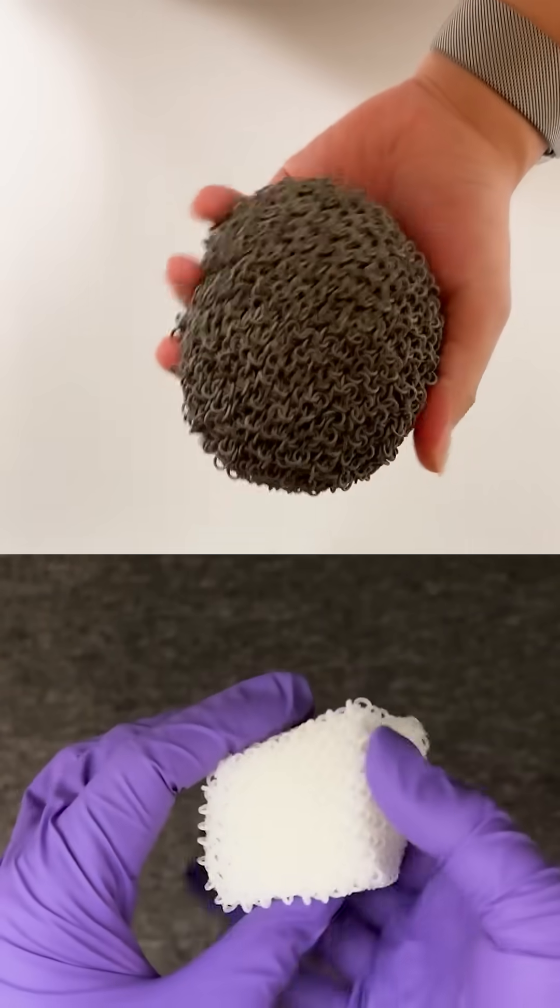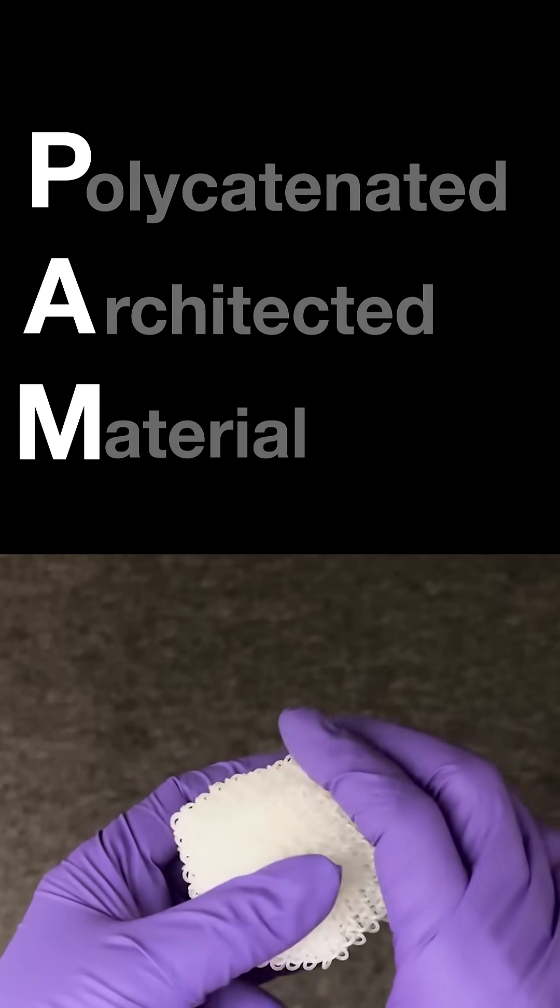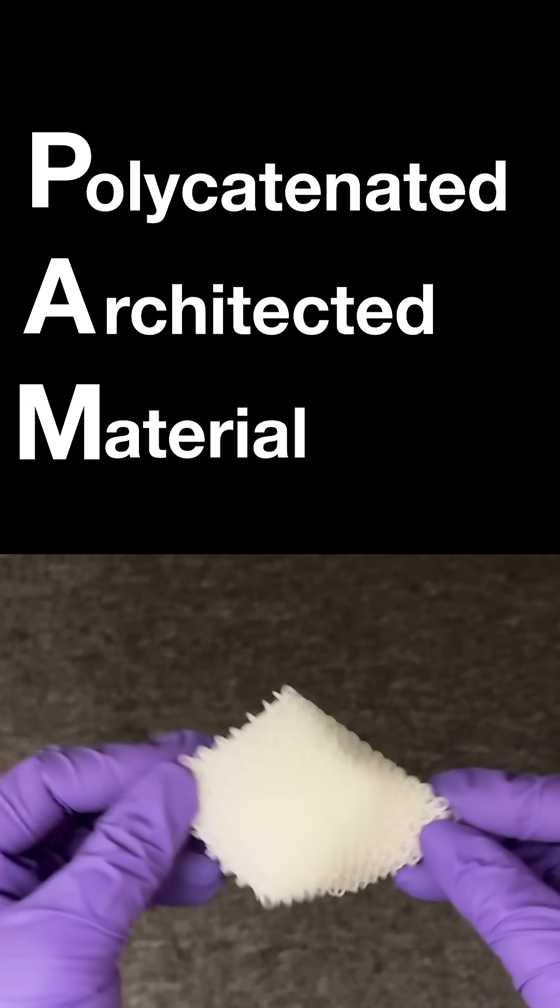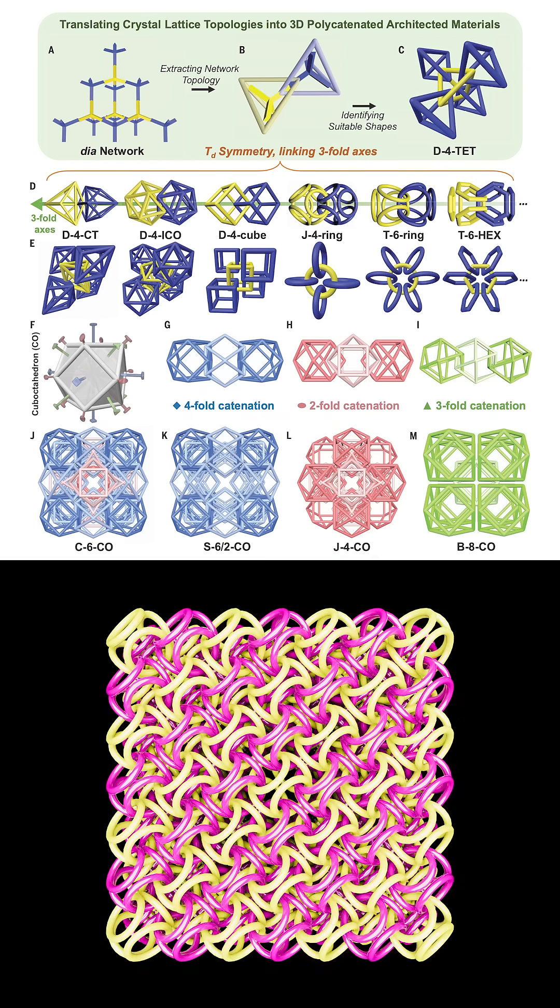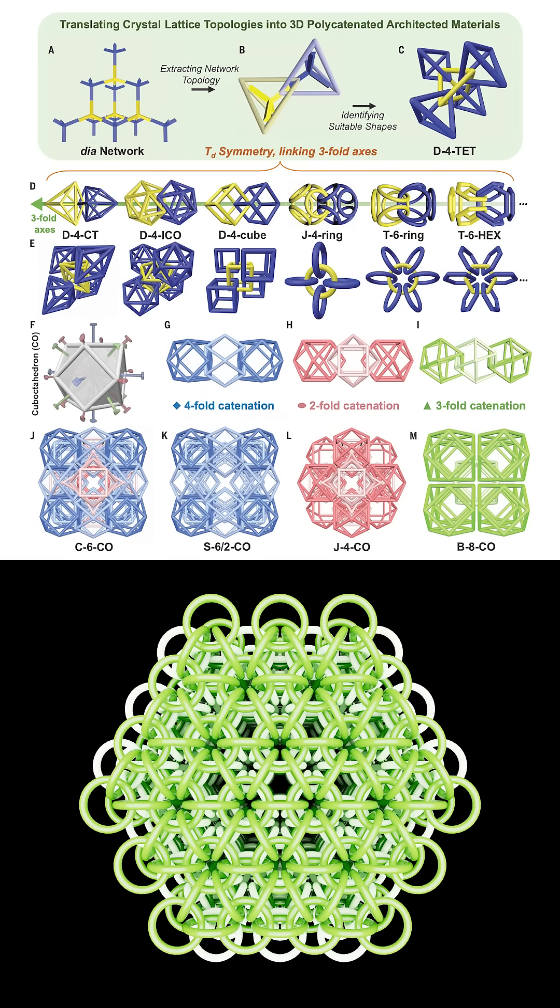Researchers at Caltech have created a new material called PAM, poly-catenated architected material, made of cage particles and wireframe shapes like rings interlocked in different three-dimensional networks.